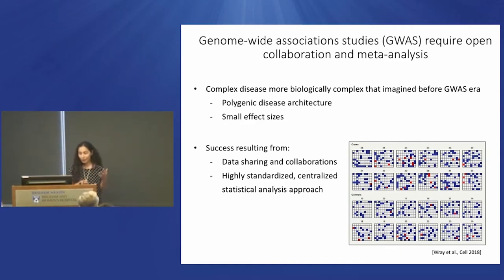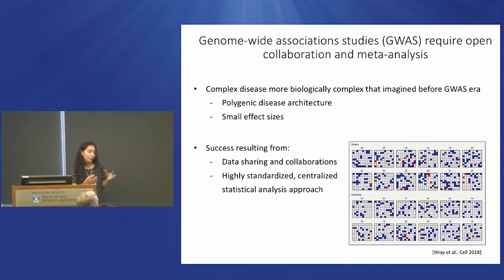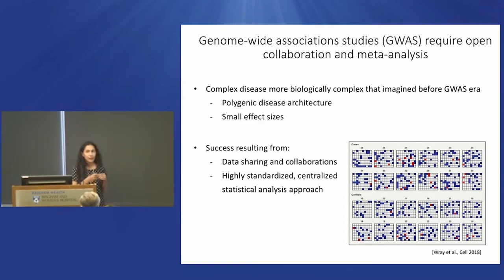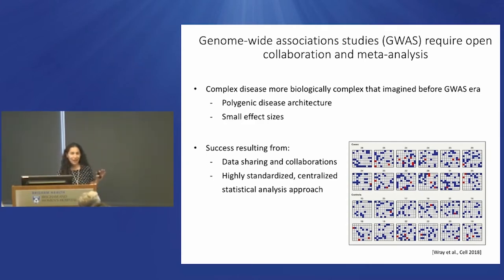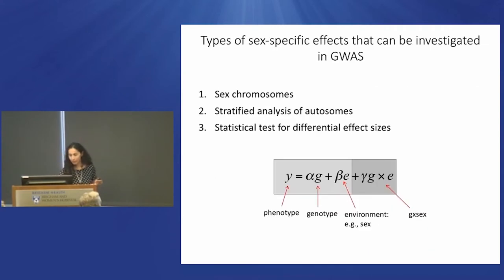For GWAS to be successful, large consortia had to be formed and data had to be openly and transparently shared. Statisticians and computational scientists got involved in a true way to create standardized pipelines for analyzing and combining data to make inferences. But one challenge now is that these standardized pipelines are too standardized and not nuanced enough to answer some more specific questions I'll mention.